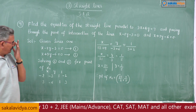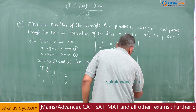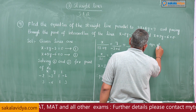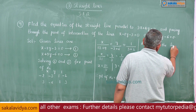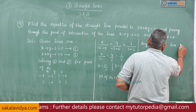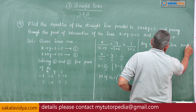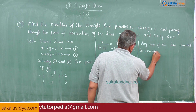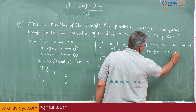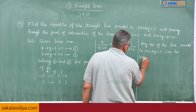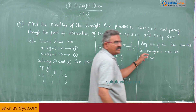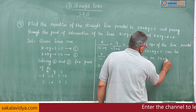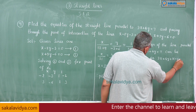This is the first part of the problem. Now, any equation of the line parallel to 3x plus 4y is equal to 7 — there is no change in the coefficients, they differ only by the constant. So the parallel line can be written as 3x plus 4y plus k is equal to 0, this is equation 3.